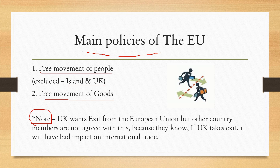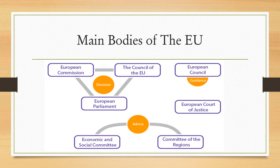Next are the main bodies of the European Union. In this diagram you can see: the European Commission, the Council of the European Union, the European Parliament, the European Council, the European Court of Justice, the Economic and Social Committee, and the Committee of the Regions. First, the European Council is made up of the leaders of each member country, and it defines the European Union's overall political direction and priorities.